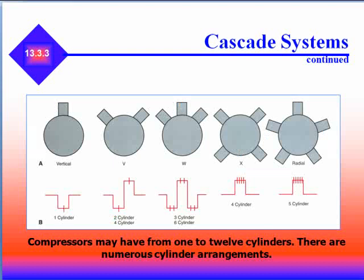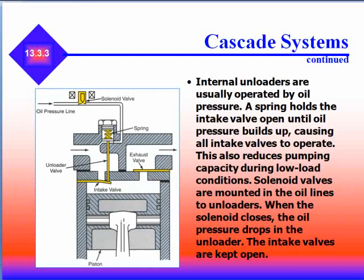Compressors may have from 1 to 12 cylinders with numerous cylinder arrangements. In cascade systems, internal unloaders are usually operated by spring and oil pressure. A spring holds the intake valve open until oil pressure builds up, causing all intake valves to operate — this also reduces pumping capacity during low load conditions. Solenoid valves are mounted in the oil lines to unloaders.